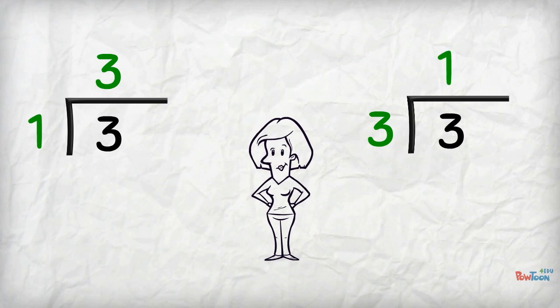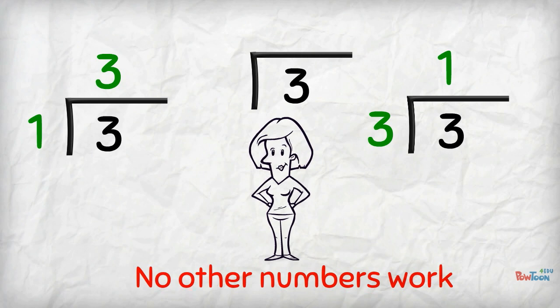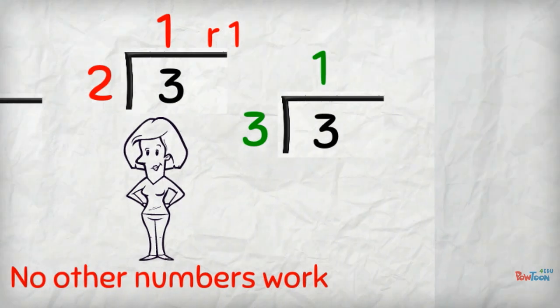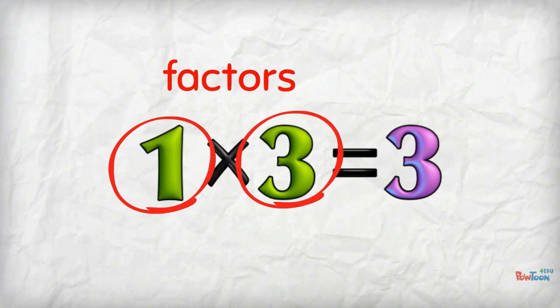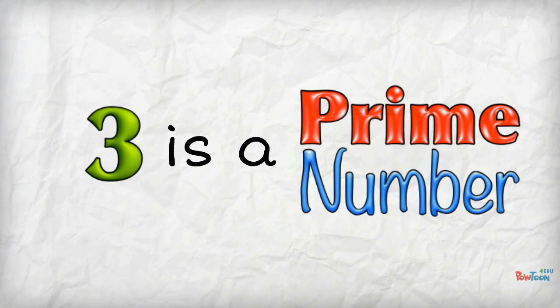I cannot use any other number to divide up 3. I can't use 2 because I get a remainder of 1 left over. You can see the only factors of 3 are 1 and 3 itself. This makes 3 a prime number.